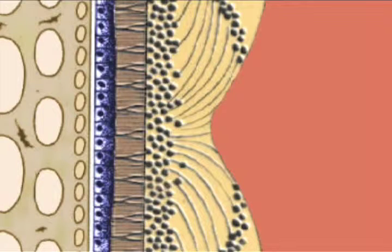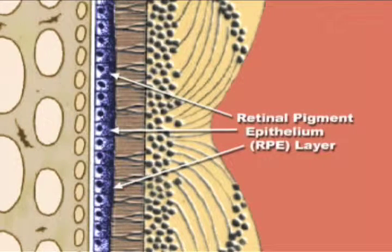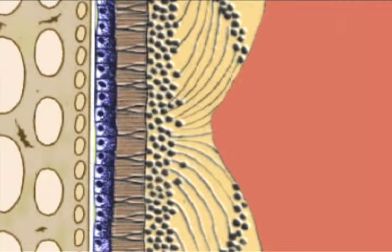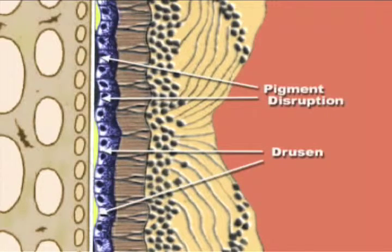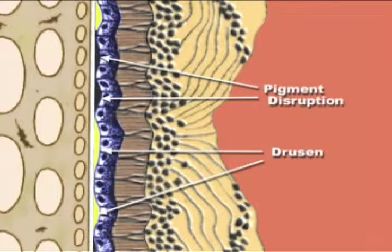In patients with dry AMD, the layer we call the retinal pigment epithelium, or RPE, is disrupted by deposits or drusen and other age-related changes. These changes may cause vision to deteriorate.